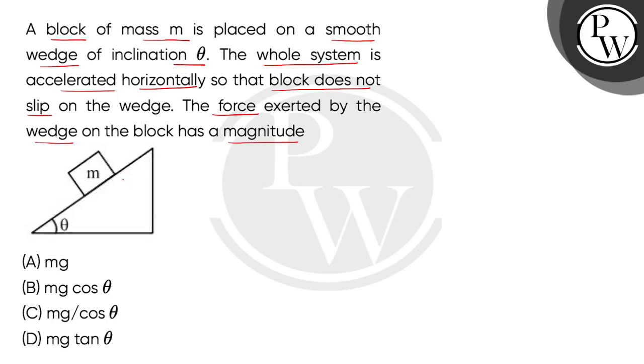Here we have shown in the diagram that it is a smooth wedge, which means that between the block surface and wedge surface we have not considered friction. The angle of inclination given is theta and the mass of the block is M.